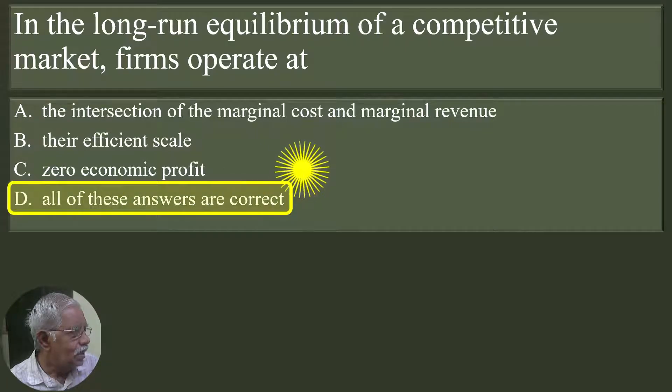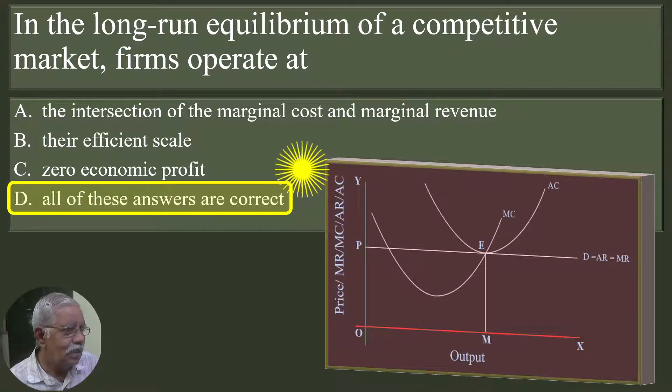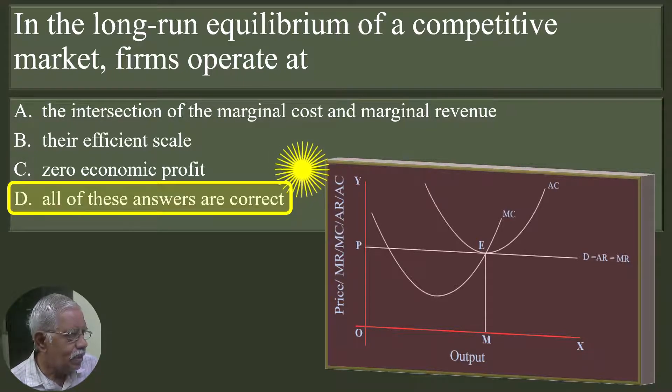Option D is the correct answer. All of these answers are correct. How? Look at this graph. At point E, the marginal cost curve cuts the marginal revenue curve from below. At point E, the firm is operating at its maximum efficiency. At point E, average cost is equal to average revenue. The firm earns zero economic profit.